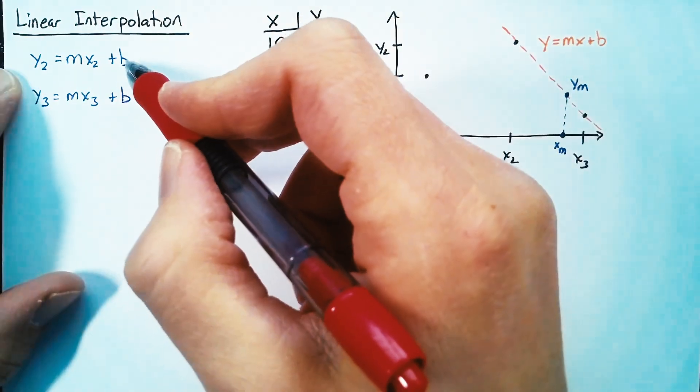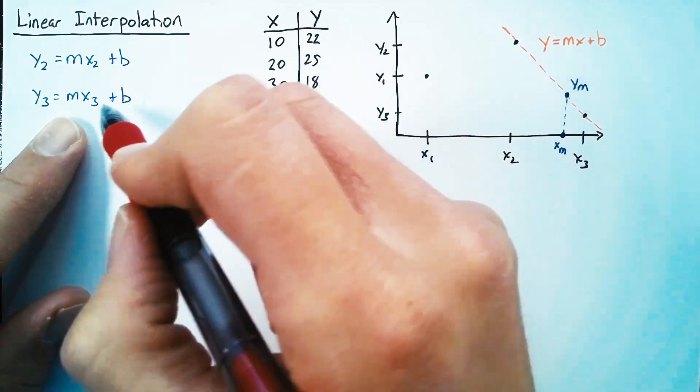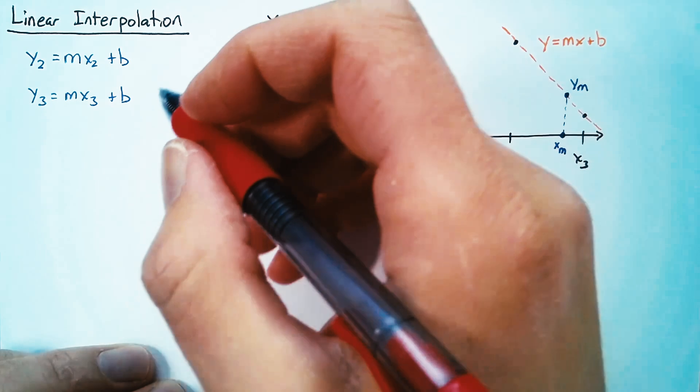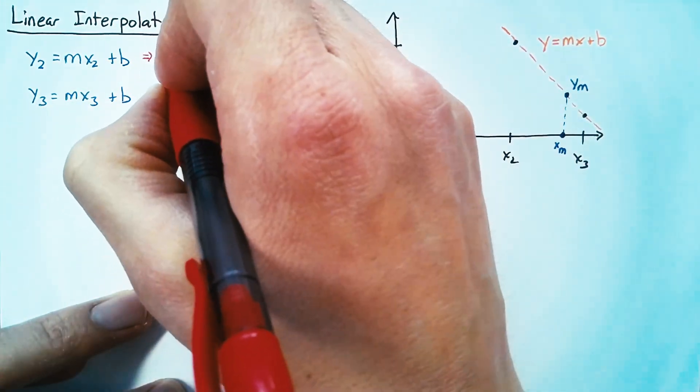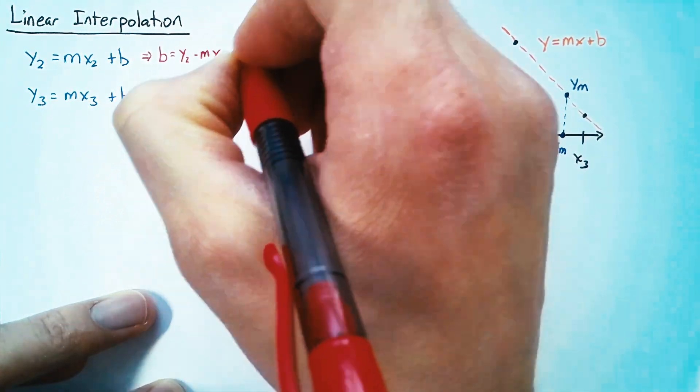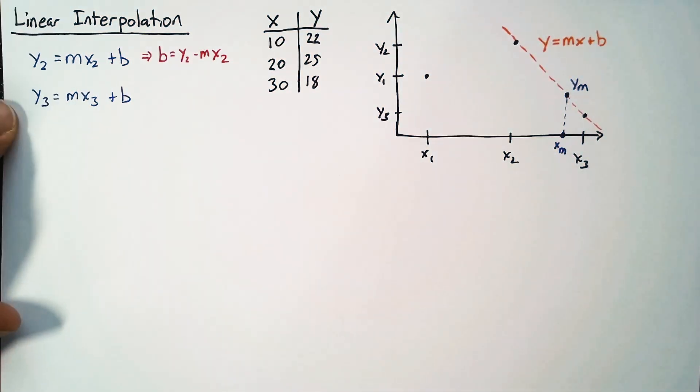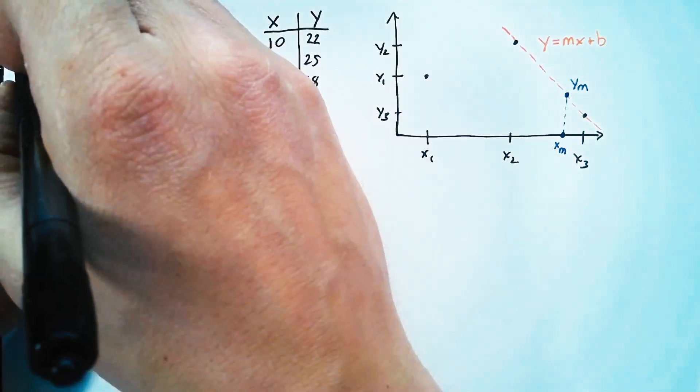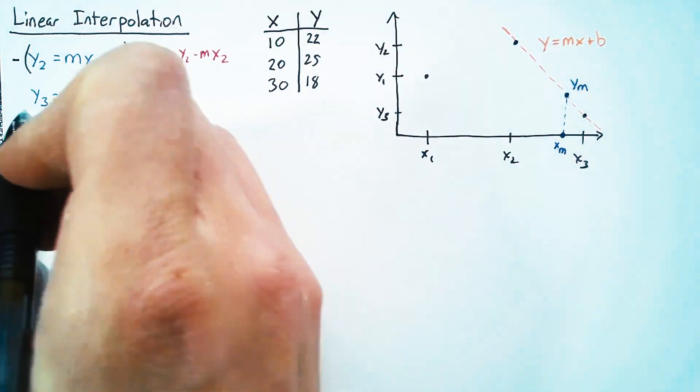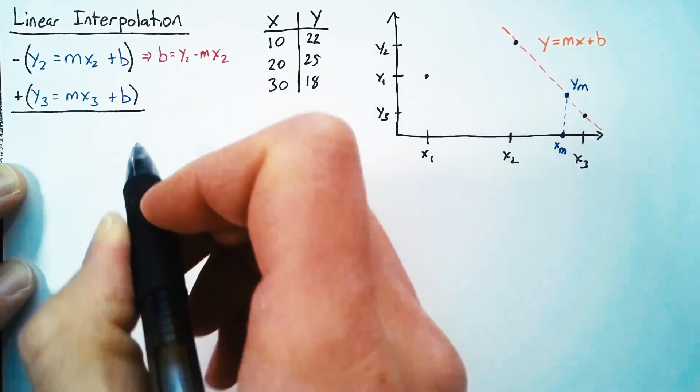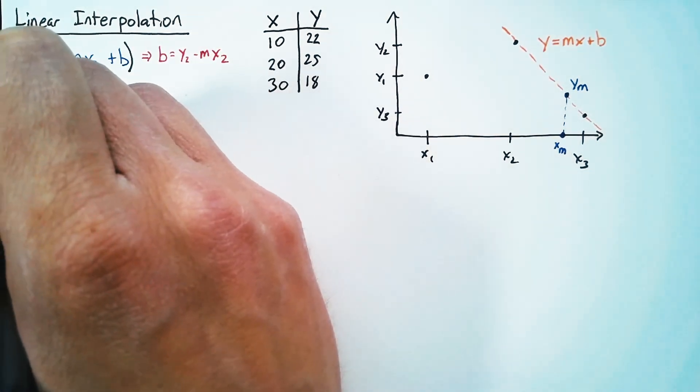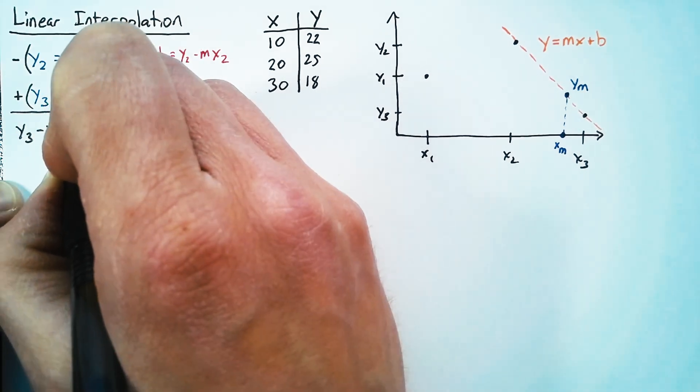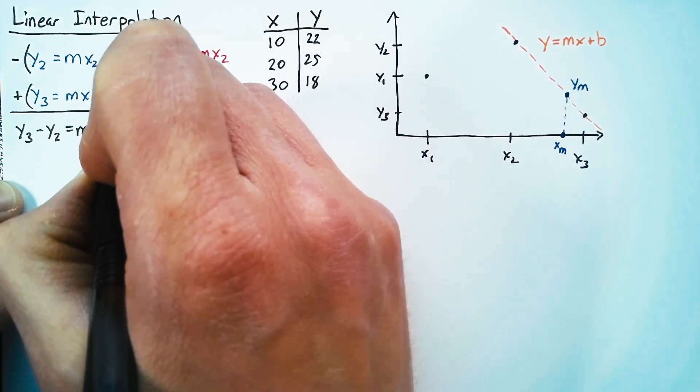So we now have two equations with two unknowns, m and b. We can solve this a number of different ways. What I'm going to do is I'm going to take this first equation and solve it for b. And then I'm going to do something a little tricky in order to solve for m. I'm going to multiply our first equation by negative one. And then I'm going to add our second equation.